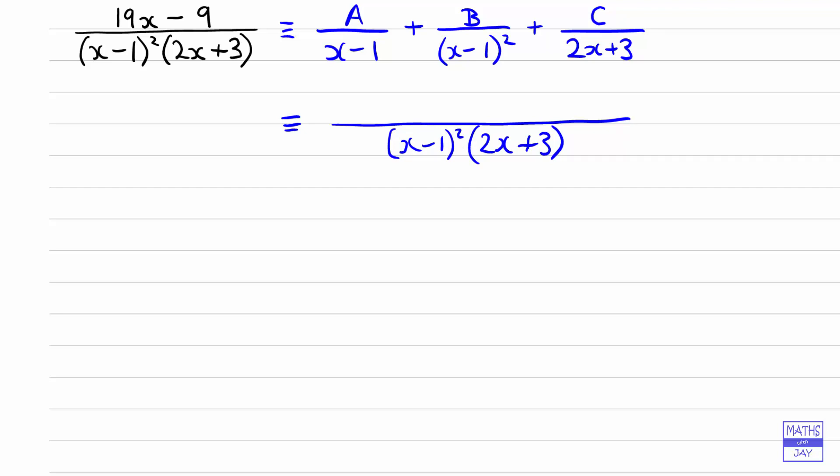And then it's just a matter of working out what each fraction is going to be. So the first one, we've multiplied the denominator x minus 1 by x minus 1 and 2x plus 3. So we multiply the numerator, so that's going to be A times x minus 1 and 2x plus 3. And then looking at the next fraction, we've multiplied the denominator x minus 1 squared by 2x plus 3. So that's what we'll multiply B by.